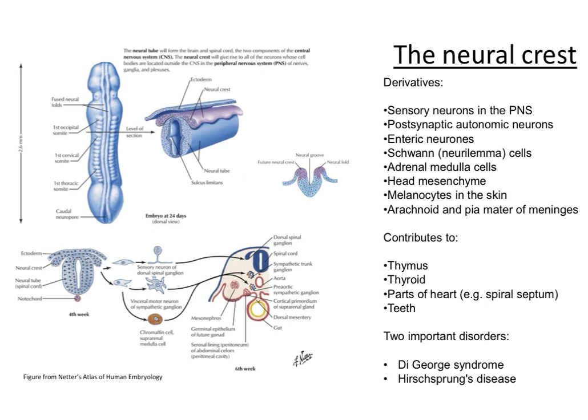So that's all I wanted to talk about with regard to the neural crest cells. These are extremely important cells, and it's important that you go away and do some more reading on DiGeorge syndrome and Hirschsprung's disease. Thank you for listening.